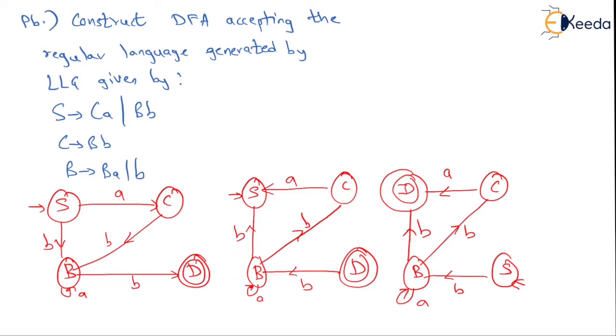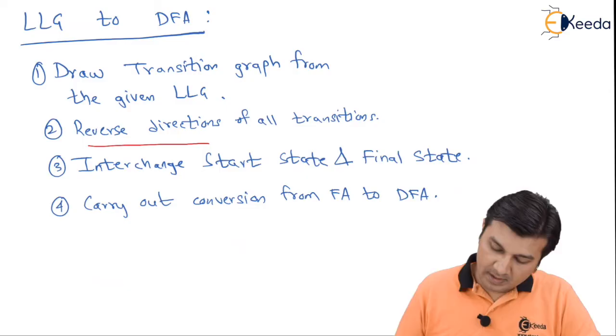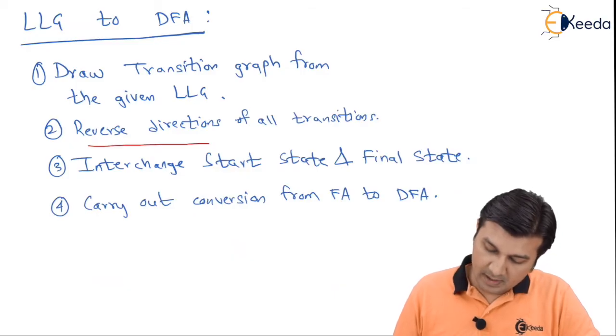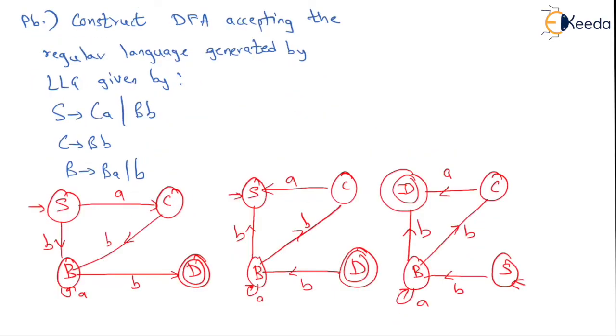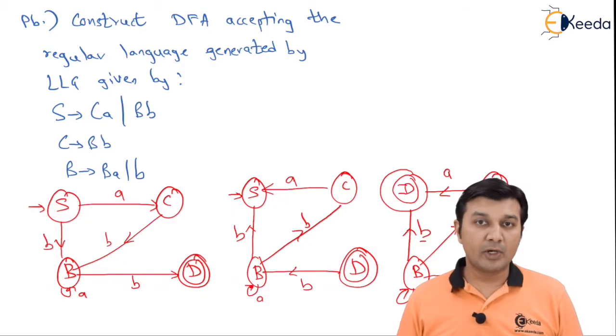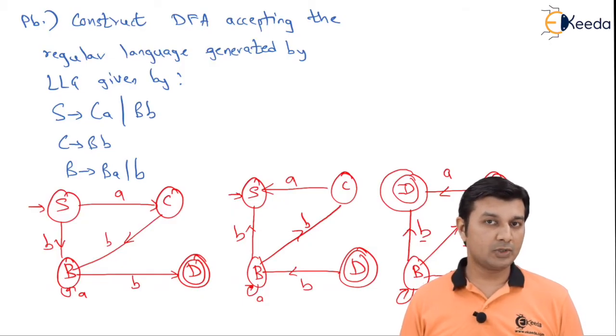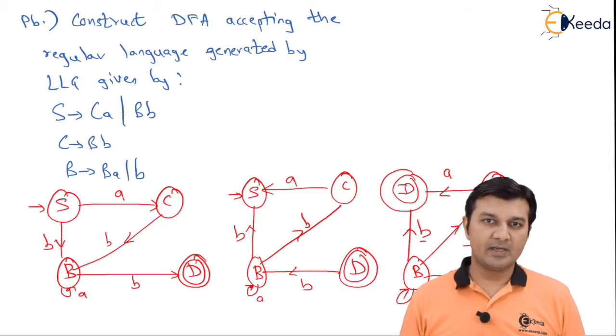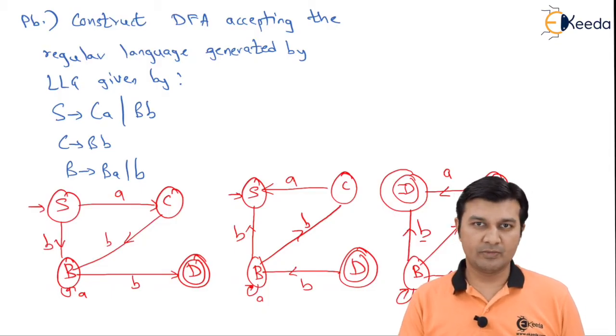Going ahead, the last step says carry out the conversion from FA to DFA. So now if I observe this particular diagram, I see that B on B is going to D and B on B is also going to C. So the diagram which we are having in front of us is a finite automata but it is not a deterministic finite automata. Getting it converted from NFA to a DFA is something covered in the previous video.